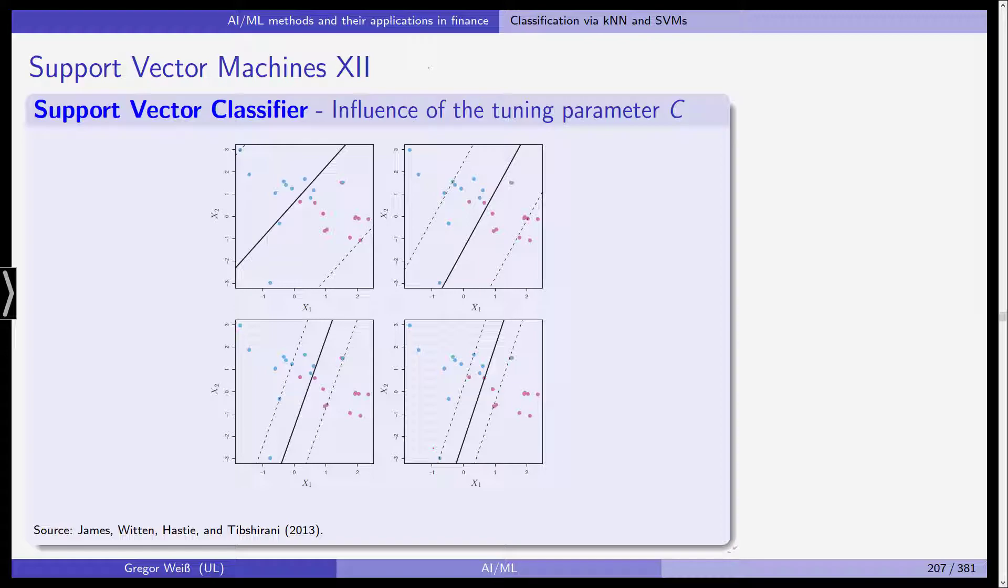We see four different support vector hyperplanes in these plots. And as you can see from the title, these plots result from different choices for the tuning hyperparameter c. For example, the largest value of c was used in the top left panel. Smaller values were used then in top right, bottom left, and bottom right. So we have four different values. And actually when c is large, then there is a high tolerance for observations being on the wrong side of the margin. And so the margin will be very large.